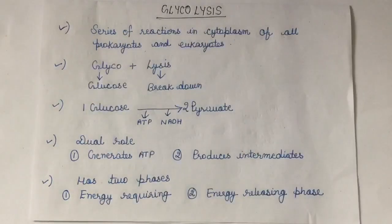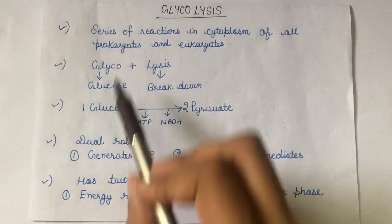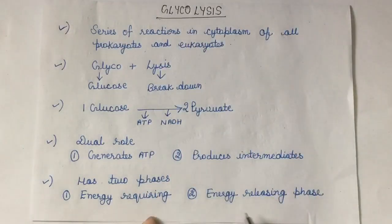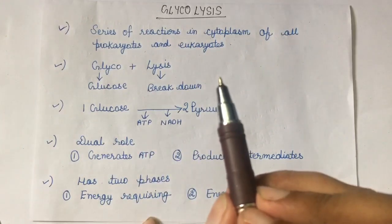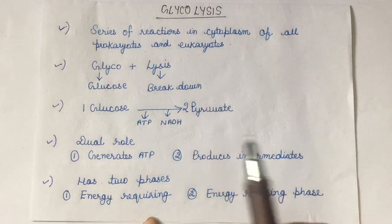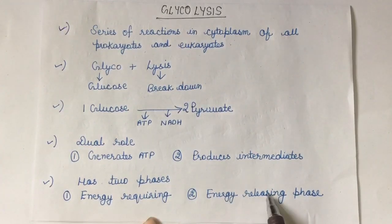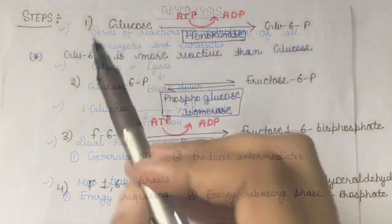So as for now, these are the key points of glycolysis. It has two phases and the total number of steps involved in glycolysis are 10: an energy requiring phase and an energy releasing phase.